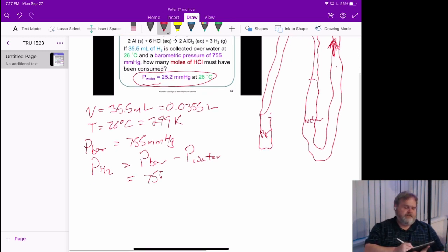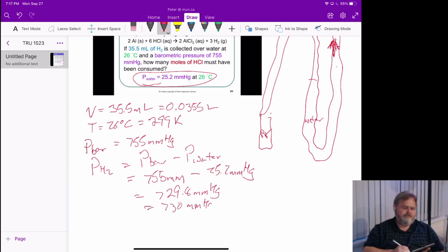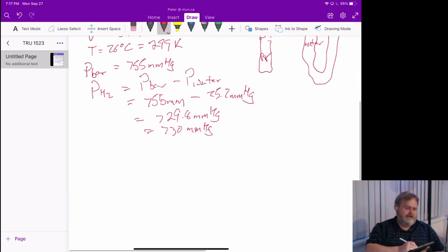And that's going to give us something like 729.8 millimeters of mercury. And now we have a pressure. Let's call it 730, just keep sig figs kind of where they should be. So now we've got that.